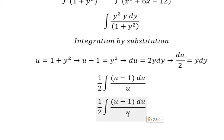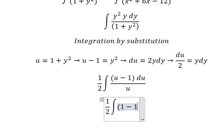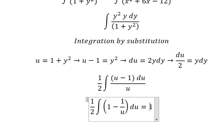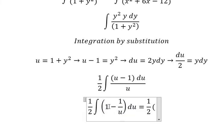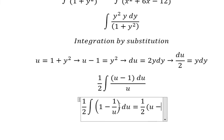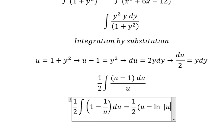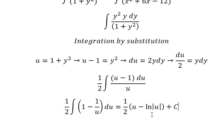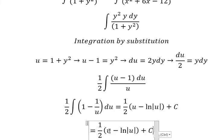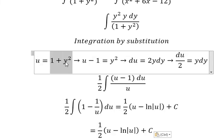So u divided by u we have number 1, and 1 divided by u we keep the same. The integration of number 1 we have u, and the integration of 1 over u we have ln of the absolute value of u, and I will put about c. And u is equal to 1 plus y squared.